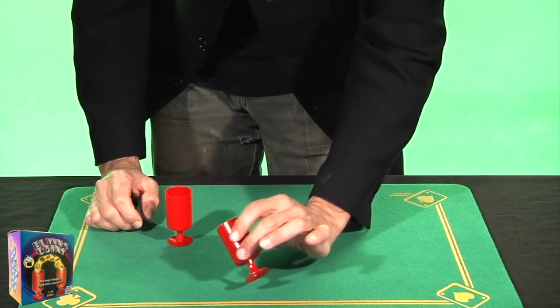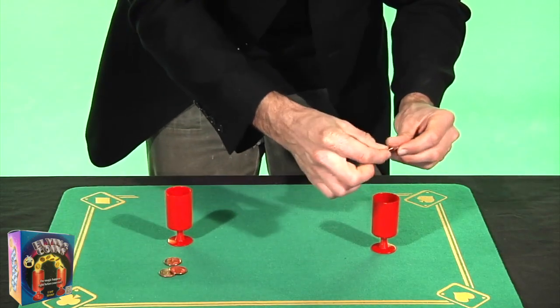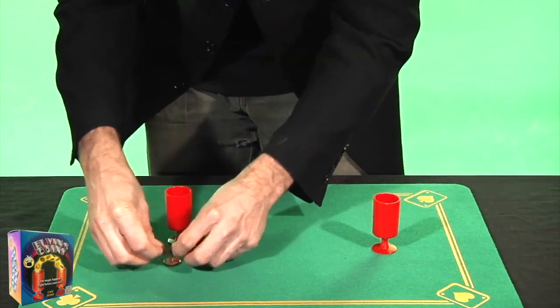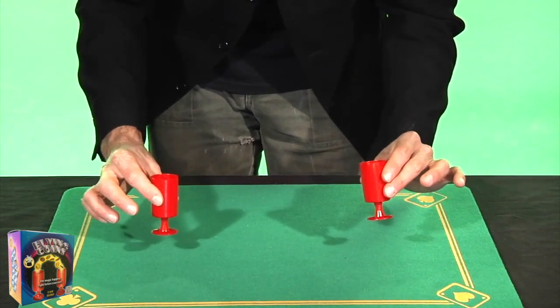But before, we'll separate them equally into the two cups. We'll put one, two, three coins in this cup, and one, two, three coins in this other cup. So, three coins in each cup.